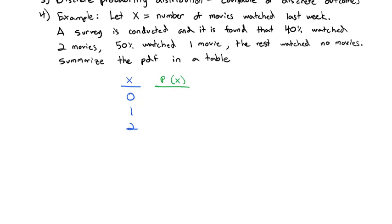We're told that 40% watched two movies. So the probability is 0.4. 50% watched one movie. The probability is 0.5. We're not told what percent watched no movies. But if we add what we have together, we see we've covered 90% of the respondents. So there's only 10% left to make it equal 100%. And that must be the zero. And this becomes our probability distribution table.